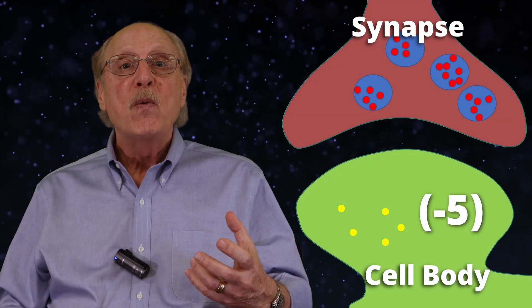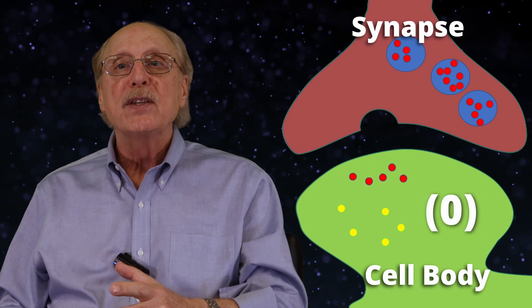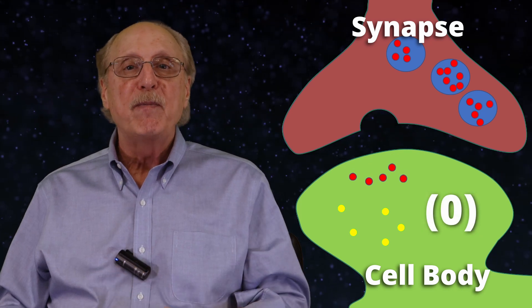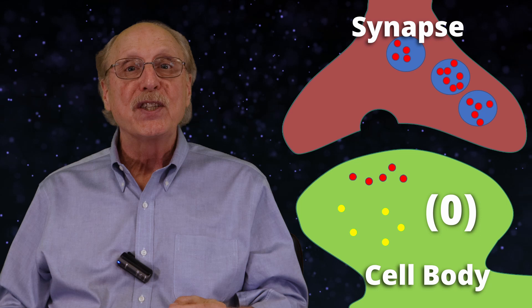In contrast, the biological neuron accumulates charge over time until a threshold is reached. The perceptron has no intrinsic memory — its value will always be the same for a given set of inputs. The neuron, on the other hand, combines its inputs with the current state of its internal charge, so there is a modicum of memory and the output may be different for any given set of inputs.